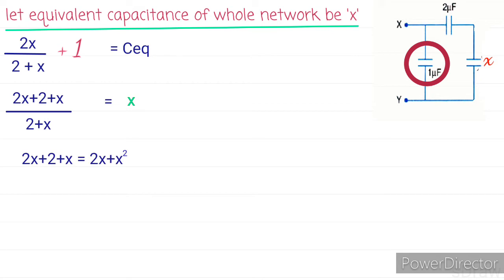2x plus 2 plus x equals to 2x plus x squared. On further solving we get quadratic equation x squared minus x minus 2 equals to 0.